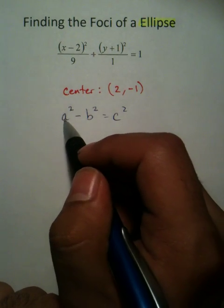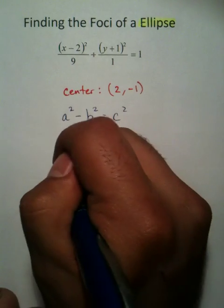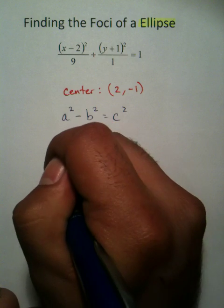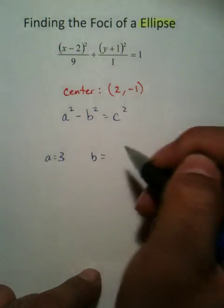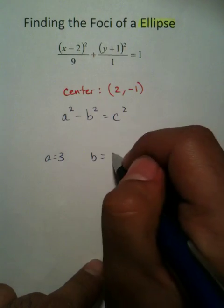a is always the square root of the biggest denominator. So 3 is a. b happens to always be the square root of the smallest denominator. Square root of 1 is 1.